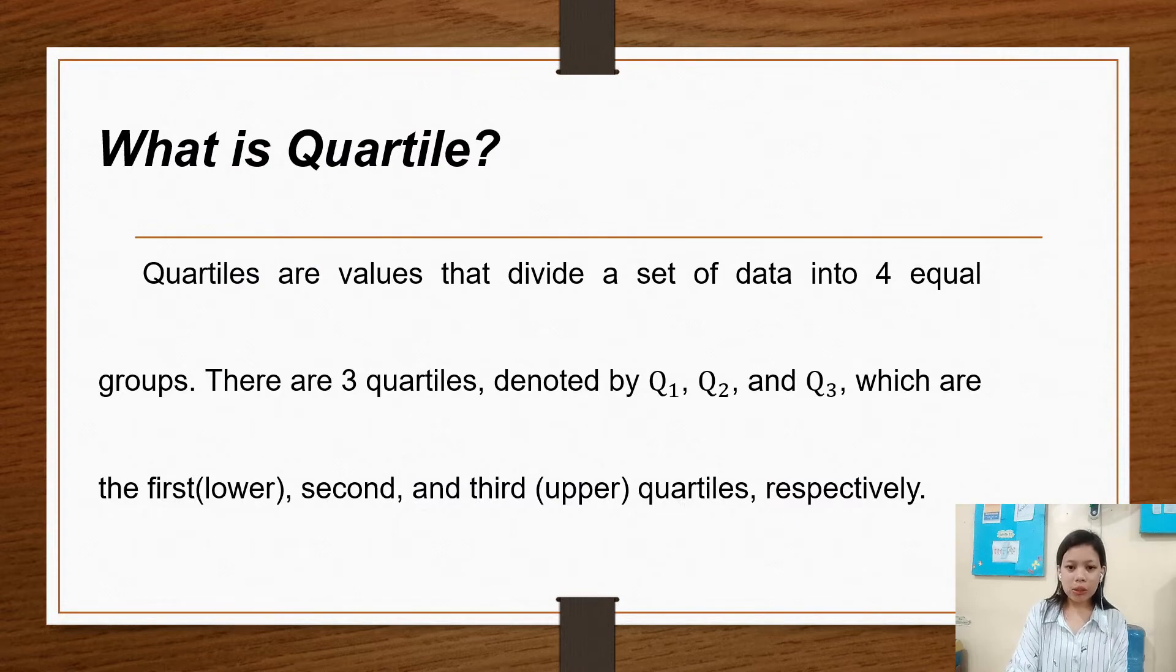What is quartile? Quartiles are values that divide a set of data into four equal groups. There are three quartiles denoted by Q1, Q2, and Q3, which are the first or lower, second or median, and third or upper quartiles respectively.